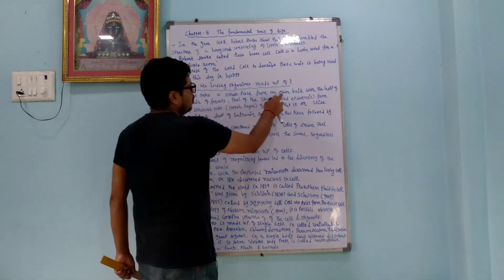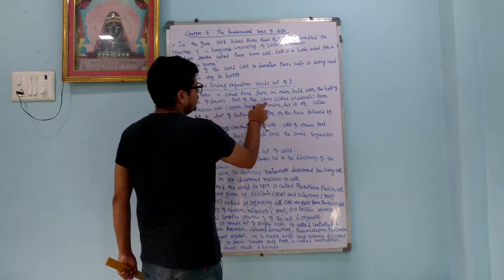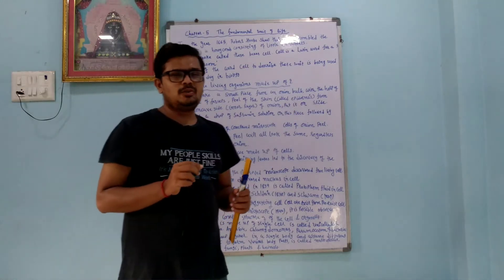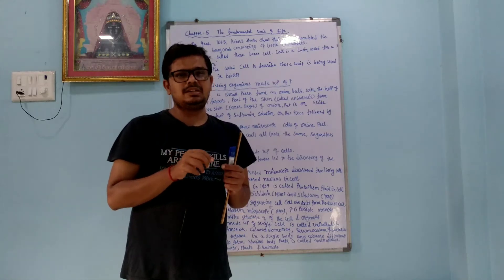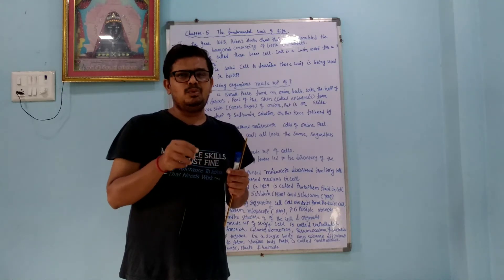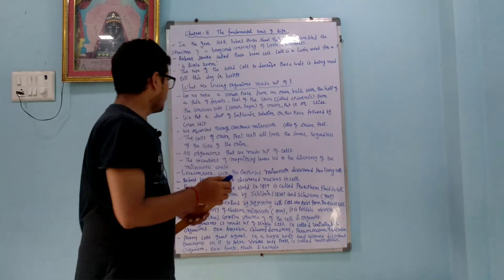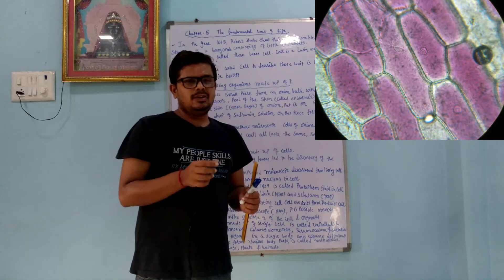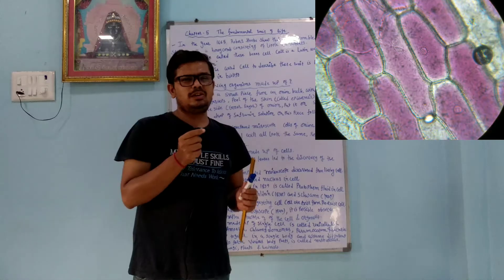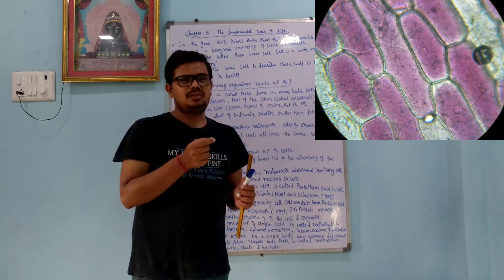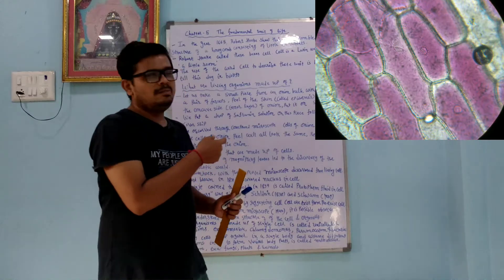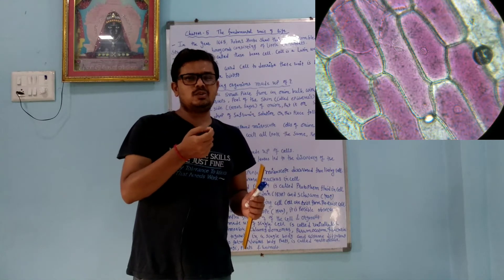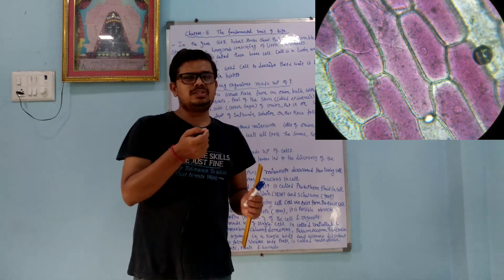Let us take a small piece from an onion bulb and peel the skin from the concave side of the onion and put it on the slide. We are going to examine the onion cell. For that we take the epidermis layer, which is the outer layer, and place it on the slide. We put a drop of safranine solution on this piece, followed by the cover slip. We use safranine solution because the onion layer is not visible without it — both light and onion layer are white, so we use safranine to colorize it.